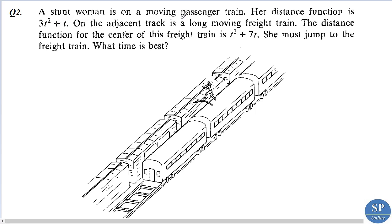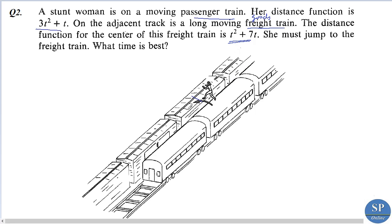Next question: a woman is on a moving passenger train. Her distance function is 3t² + t. On the adjacent track is a long moving freight train — a goods train — with distance function t² + 70. She must jump to the freight train. We need to find the best time for her to jump. The distance function of the woman is f(t) = 3t² + t and the distance function of the goods train is g(t) = t² + 70.